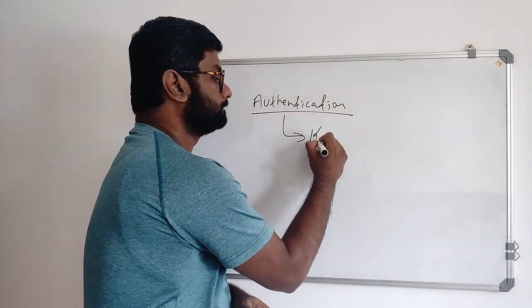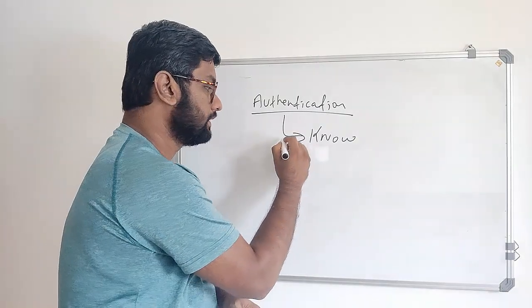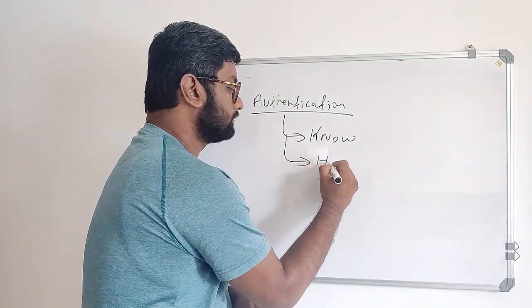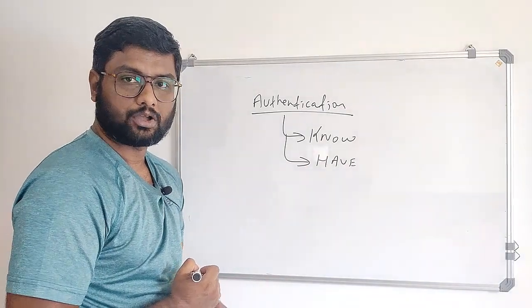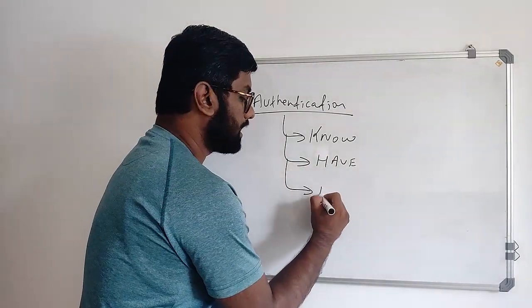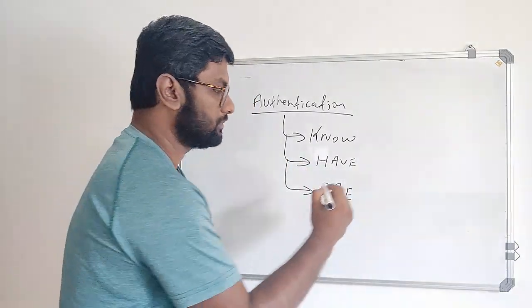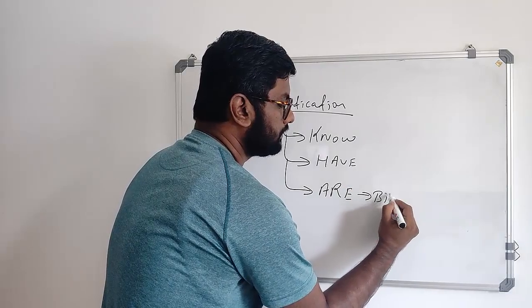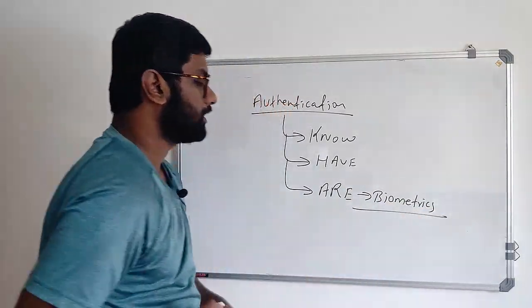When we're talking about authentication, we have three factors of authentication: something you know, which is a password, something you have, like a token or smart card, and something you are, which is biometric.